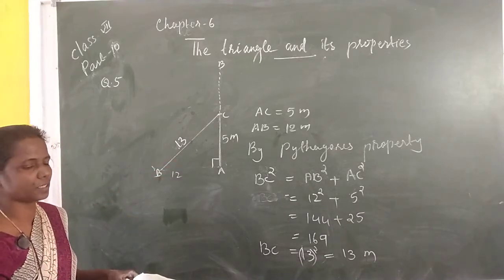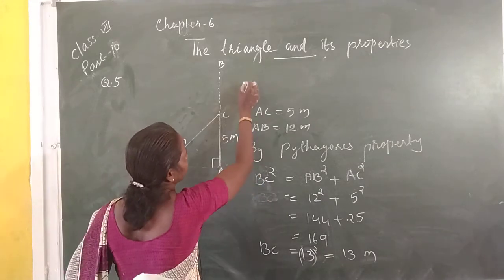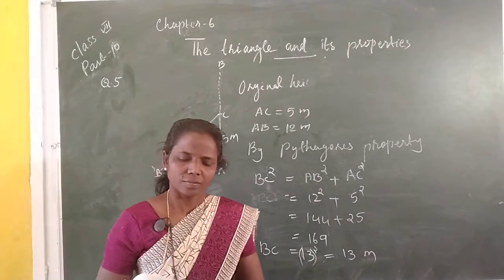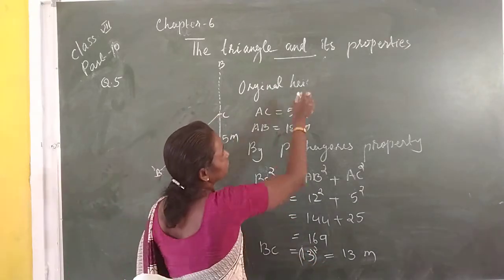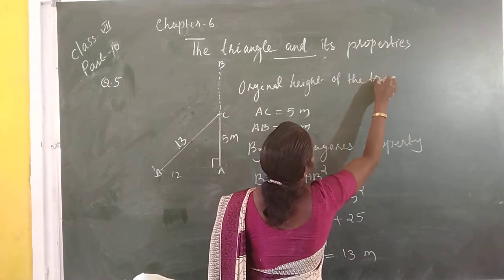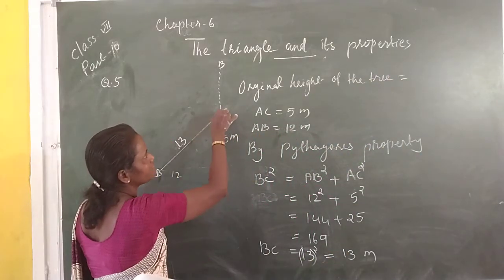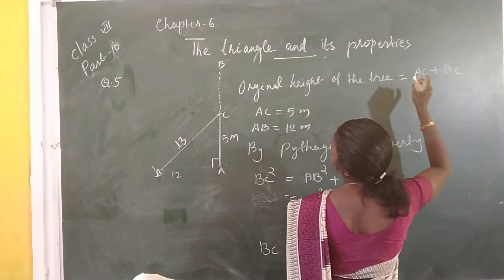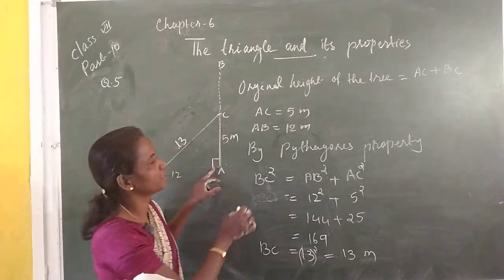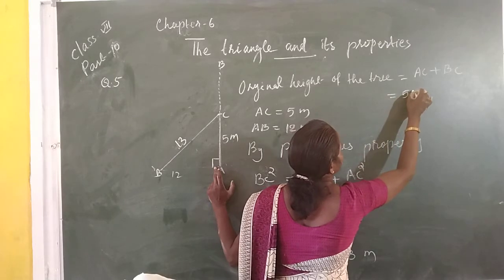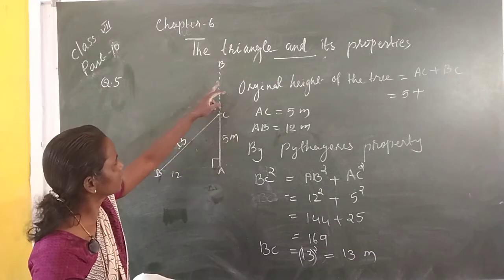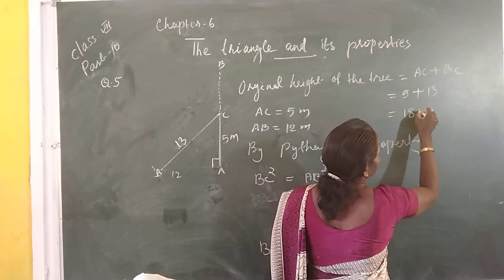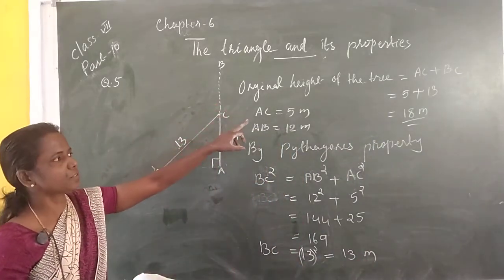Then, what is the original height of the tree? The original height of the tree is equal to AC plus BC. AC is equal to 5 meters plus BC which is 13 meters. So the total original height of the tree is equal to 18 meters.